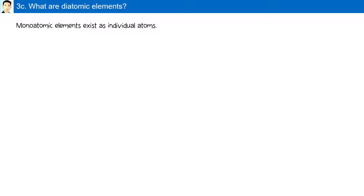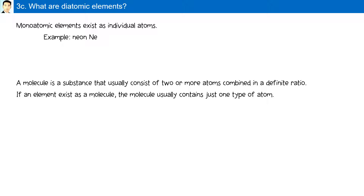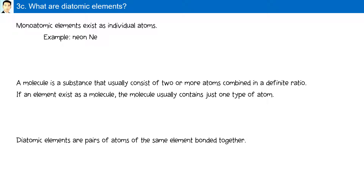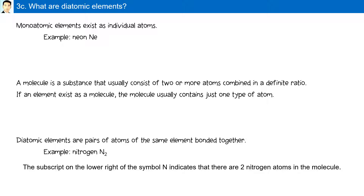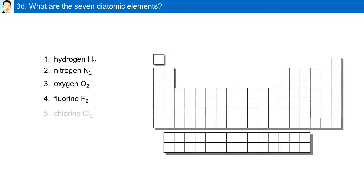What are the atomic elements? Monatomic elements exist as individual atoms, for example neon. A molecule is a substance that usually consists of two or more atoms combined in a definite ratio. If an element exists as a molecule, the molecule usually contains only one type of atom. Diatomic elements are pairs of atoms of the same element bonded together, for example nitrogen (N₂). The seven diatomic elements are hydrogen, nitrogen, oxygen, fluorine, chlorine, bromine, and iodine. On the periodic table, nitrogen, oxygen, fluorine, chlorine, bromine, and iodine form the outline of the number seven.